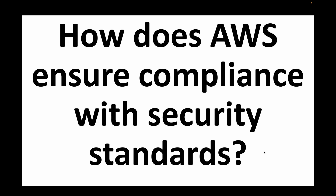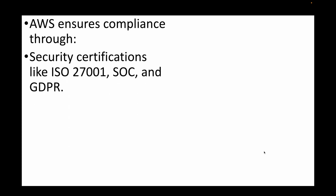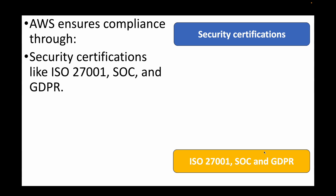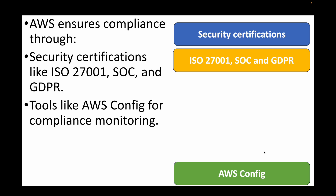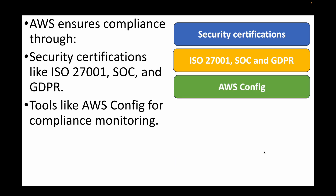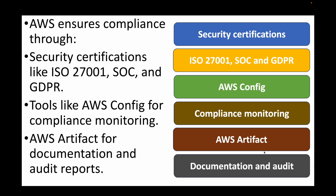The next question is: how does AWS ensure compliance with security standards? AWS ensures compliance through security certifications such as ISO 27001, SOC, and GDPR. You also have tools like AWS Config to track configurations and compliance monitoring, and AWS Artifact for documentation and audit reports. These certifications and services together ensure that AWS follows all necessary compliance requirements.